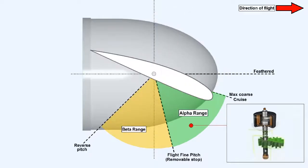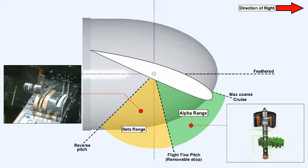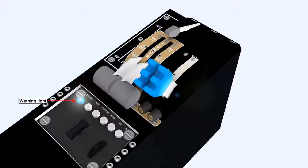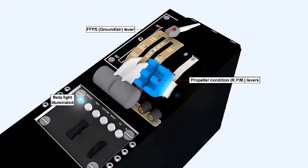With the propeller blades functioning within the alpha range, their pitch is controlled automatically by the propeller control unit. Whilst within the beta range, their pitch is controlled by the operator's movement of the engine power lever. In most aircraft the selection of the beta range is made by movement of the flight fine pitch stop (FFPS) lever. Alternatively, in some systems the selection can be made via the condition lever, that is the RPM lever itself. A warning light, usually blue or amber, illuminates whenever the flight fine pitch stop is disengaged. Additionally, other warning lights may be provided which illuminate whenever the propeller blades are moved below the flight fine pitch position, that is into the beta range.